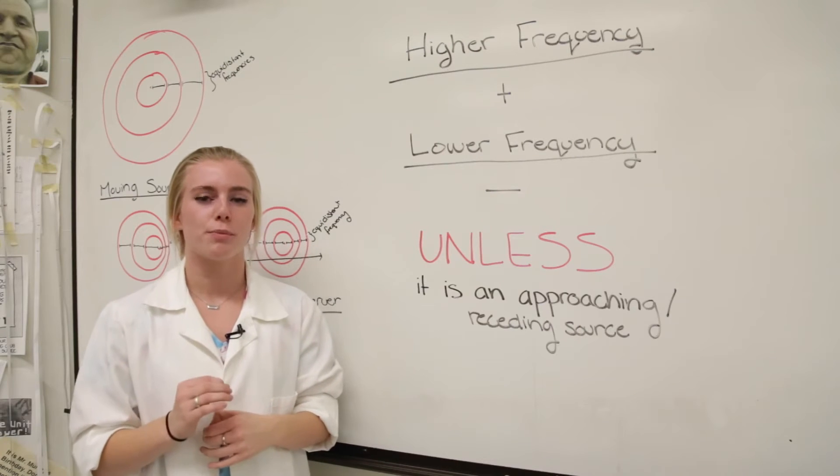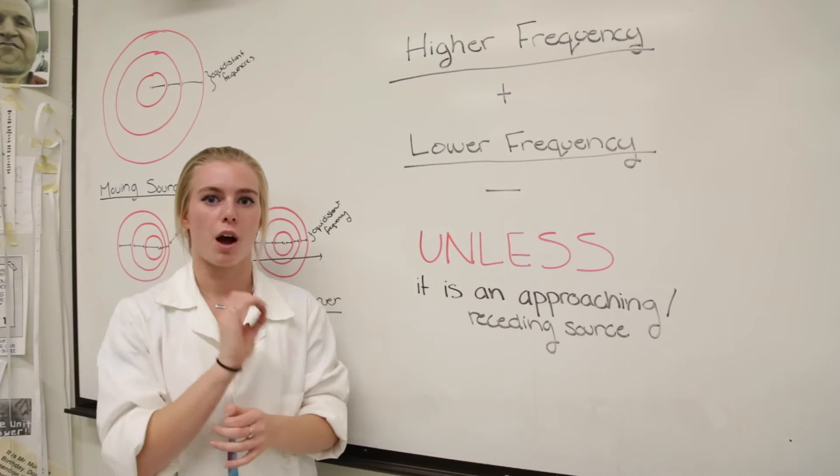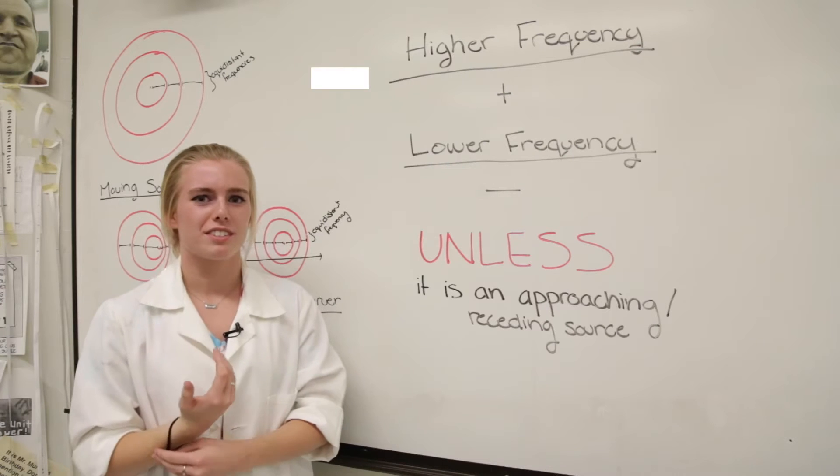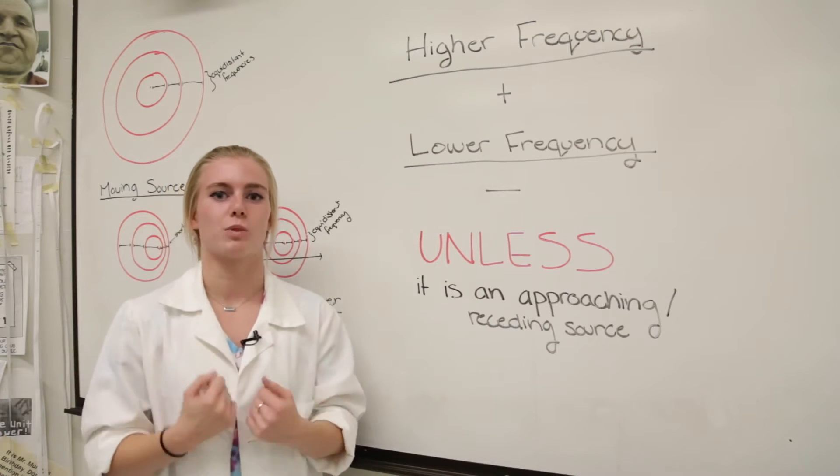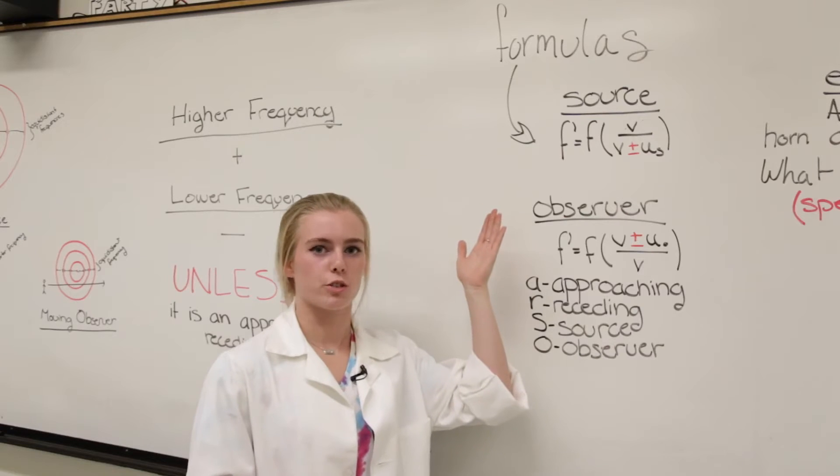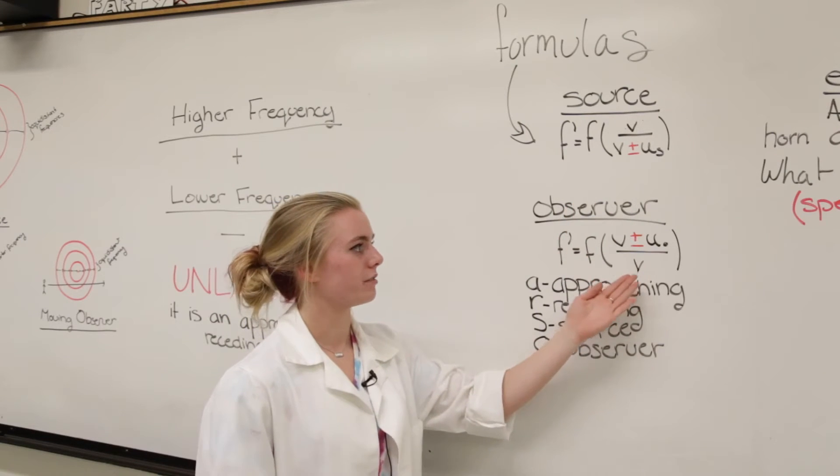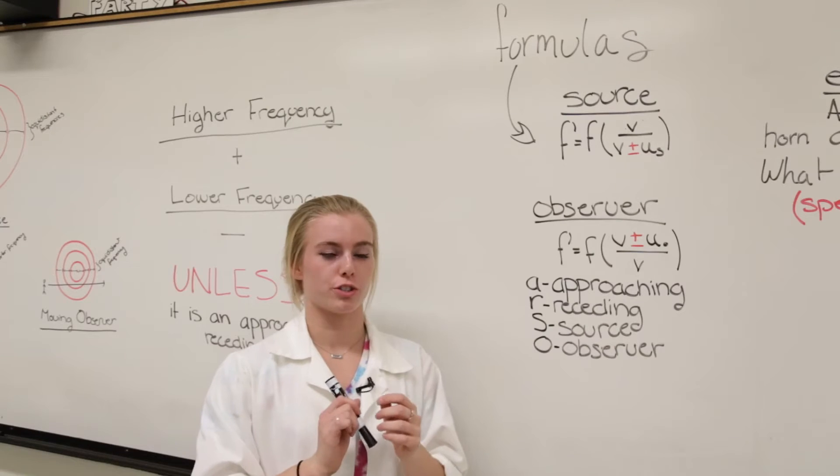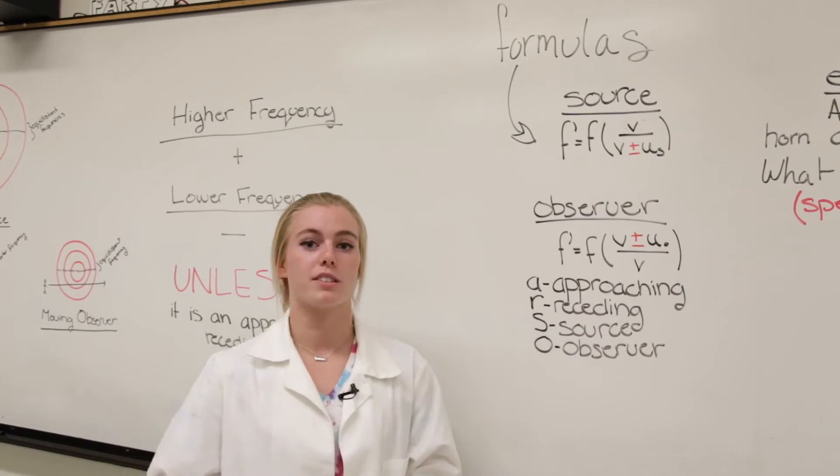A good rule of thumb for the Doppler formula is to know that when you have a higher frequency, you're going to use a positive sign. When you have a lower frequency, you're going to use a negative sign. That is, of course, unless you have an approaching or receding source in which it is reversed. And this is where things get tricky. These are the two Doppler formulas: source and observer. Notice the positive or negative. This is why I said things get tricky. It is reversed, which means that what is positive and negative for observer will be negative and positive for source.